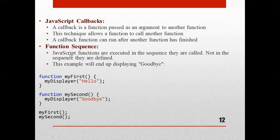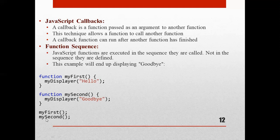What is the function sequence? JavaScript functions are executed in the sequence they are called, not in the sequence they are defined. For example, first we define myFirstFunction, then mySecondFunction, but JavaScript does not execute them in the order they are defined — it executes them in the order they are called.